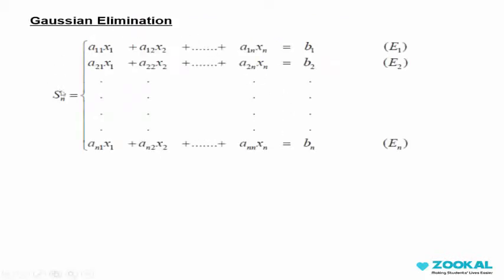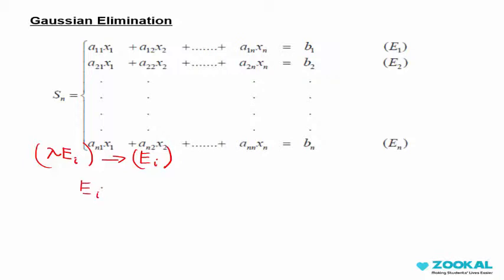Consider the following system of N linear equations in N unknowns. There are three operations permitted to work around on the equations. First, we let lambda as a non-zero constant, and equation E can be multiplied by any non-zero constant. Second, we can add EI with another equation. And the third one, we can swap the equations order.